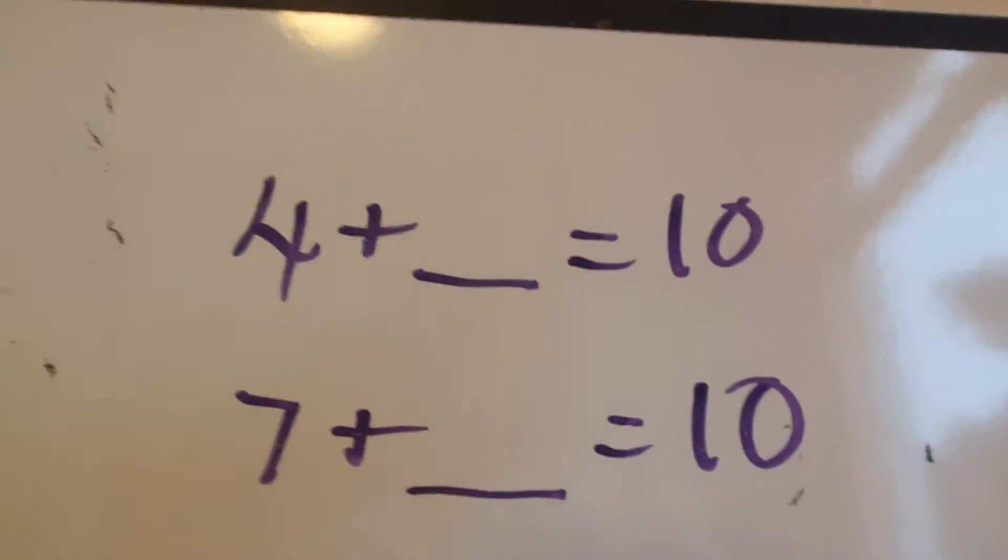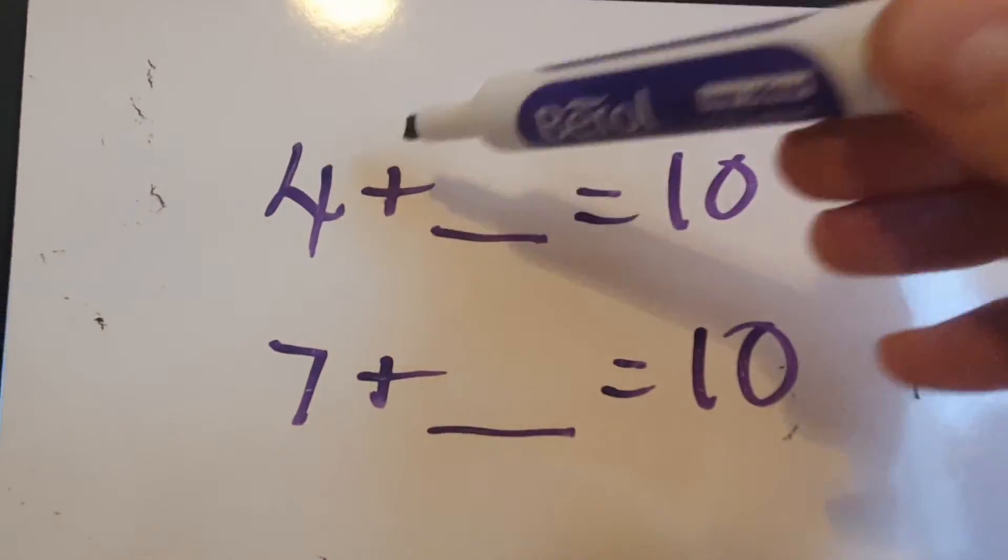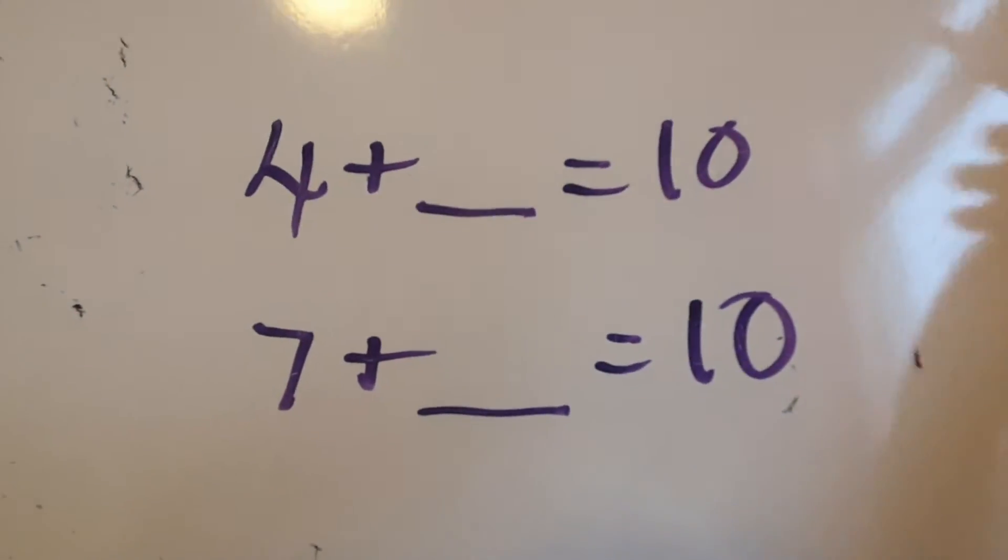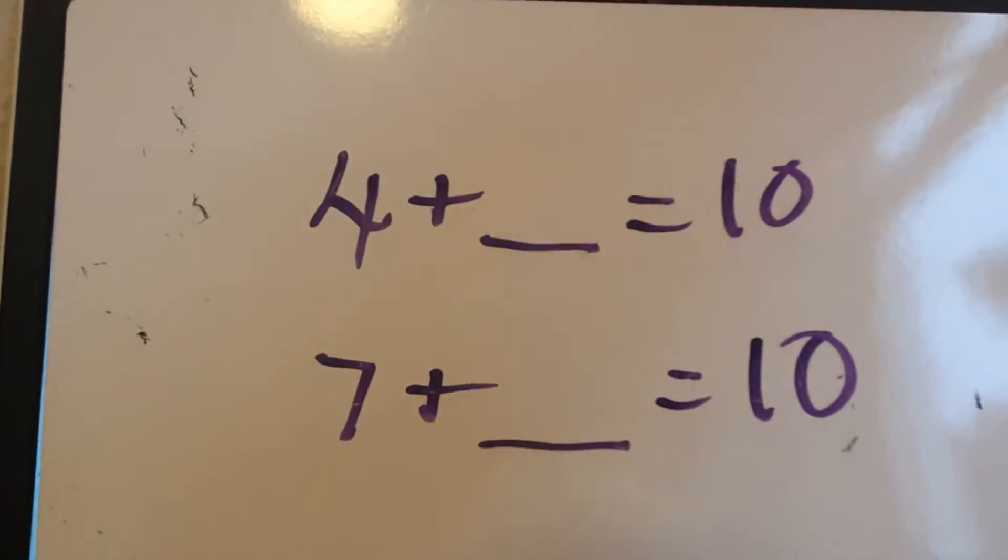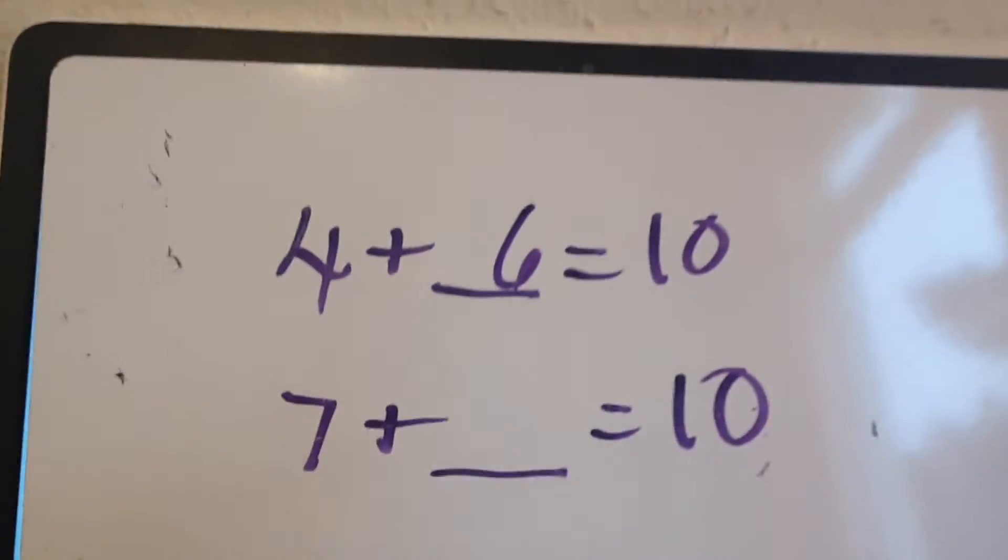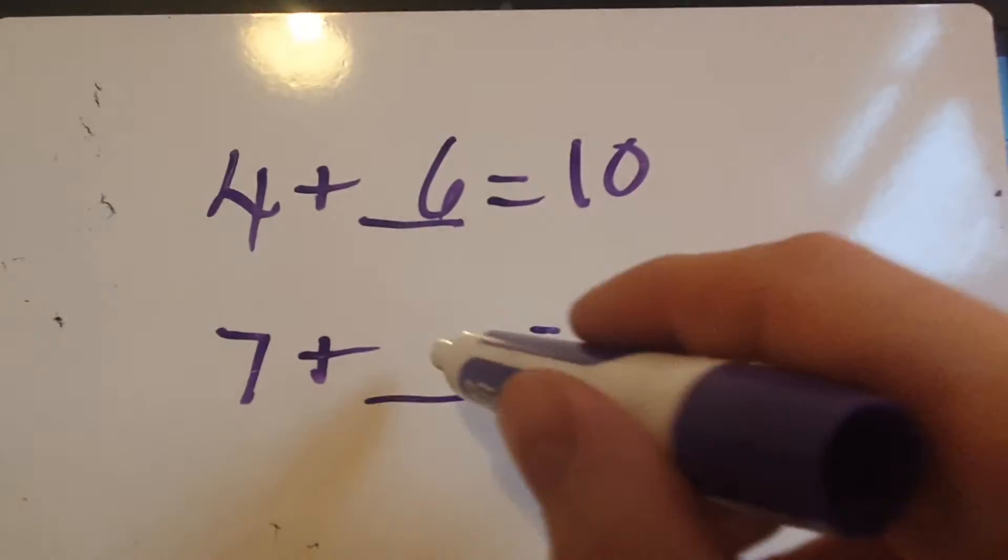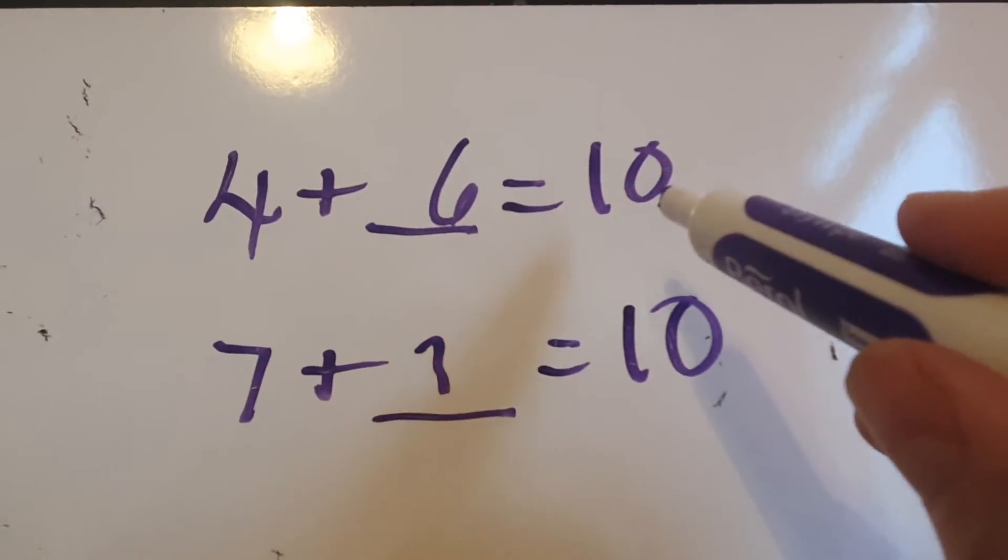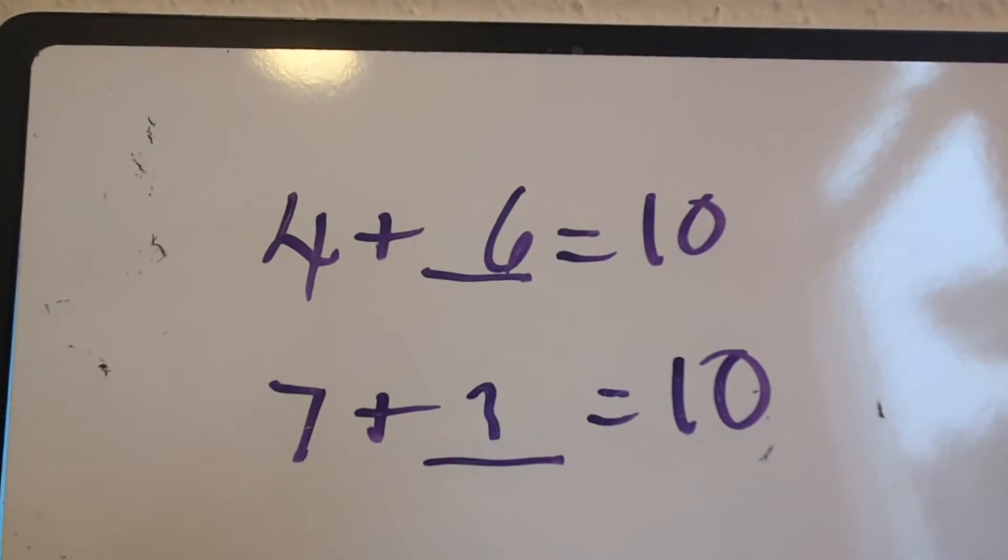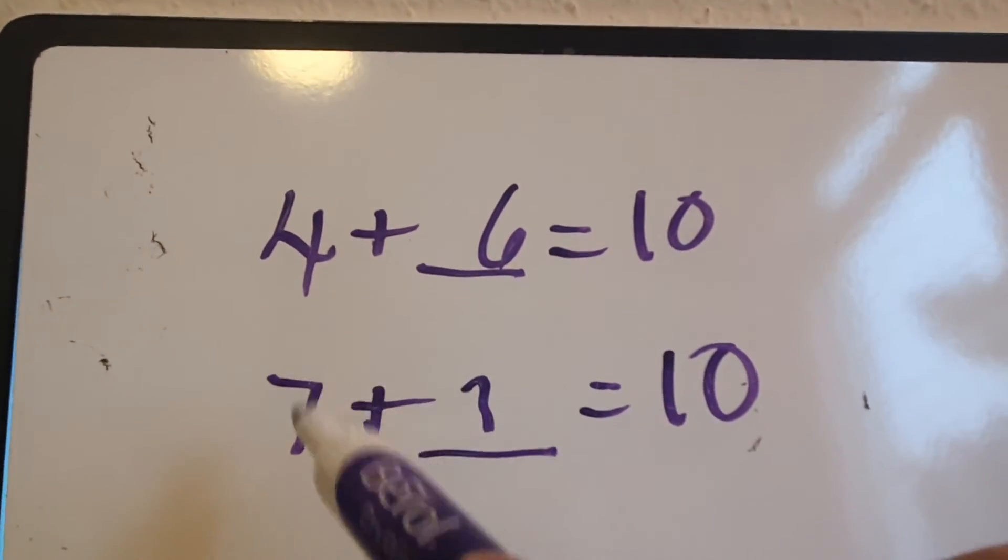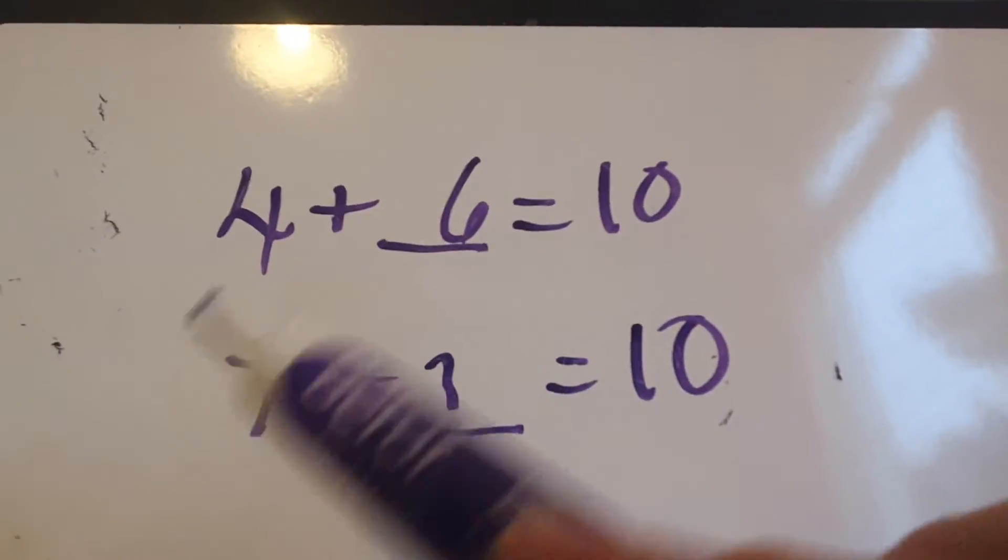We've been looking at number bonds over the last two weeks. I've got 4 add something equals 10. We should all know that, it should be split second. 4 add what? 6. 7 add what is 10? 3. Another way we could have done that is say, well, what's 10 take away 4, or 10 take away 7. So there's two different ways we can do that.